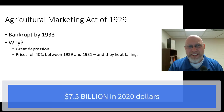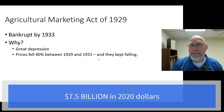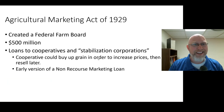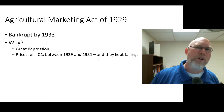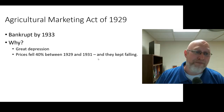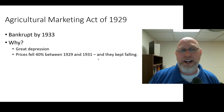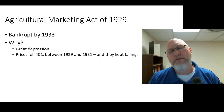By 1933, that 500 million dollars — and I'll put down what that is in current money — was gone. The Federal Farm Board was completely bankrupt by 1933, because the Great Depression drove agricultural prices down dramatically.